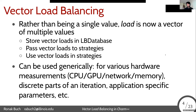That's essentially what vector load balancing is for us. Rather than being a single value — which has traditionally just been the CPU load — load is now a vector of multiple values. We've had to make a few changes to the CHARM infrastructure: storing vector loads in the LB database, passing them into strategies, and using them there to make decisions. These vector loads can be filled with really any data — hardware measurements such as CPU time or GPU time, memory capacity, network sends, discrete parts of an iteration like sub-phases, or application-specific parameters.